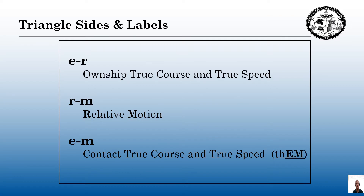I mentioned I will be using the ERM triangle. Here are the triangle sides and labels: E to R is going to be our own ship's true course and true speed. R to M is going to be relative motion. E to M is the contact's true course and true speed — or I like to think of THEM, T-H-E-M.